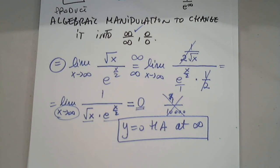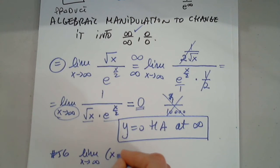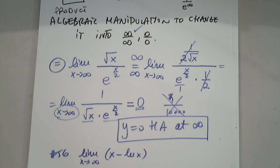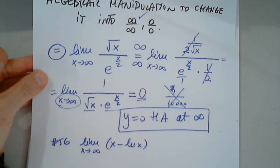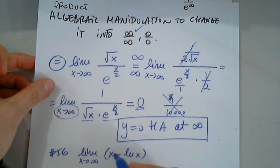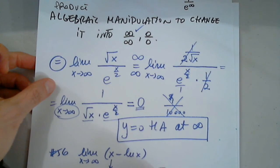Okay, I'd like to work on this one, 56. Let me copy it, and I'll stop sharing. So limit as x approaches infinity from x minus natural log x. Okay, so in this situation, obviously this is infinity, and obviously this is also infinity.